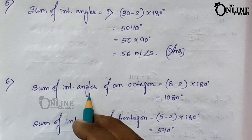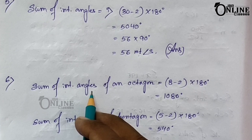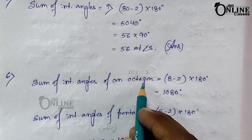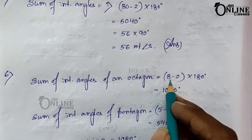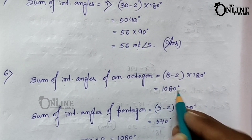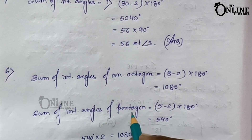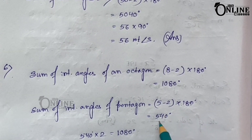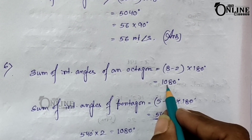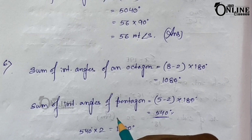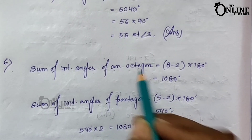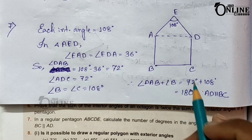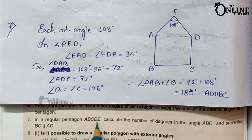Problem number six: prove that the sum of the interior angles of an octagon is twice the sum of the interior angles of a pentagon. For an octagon, n = 8: (8 − 2) × 180° = 1080°. For a pentagon, n = 5: (5 − 2) × 180° = 540°. Since 540° × 2 = 1080°, it is proved that the sum of interior angles of an octagon equals double that of a pentagon.